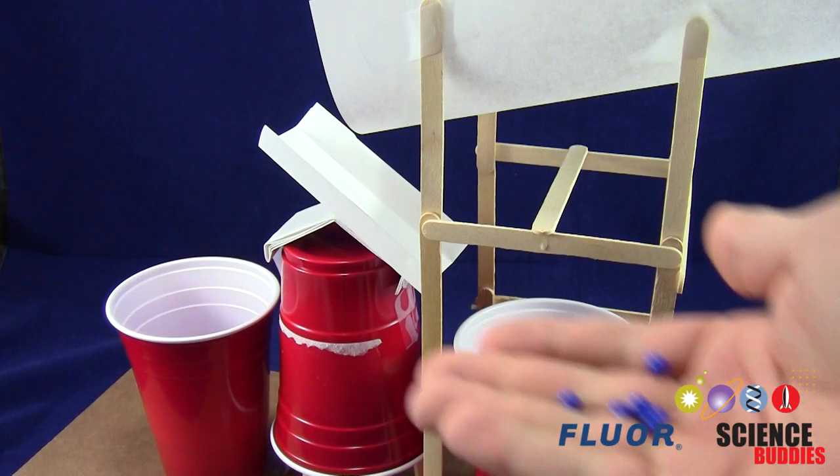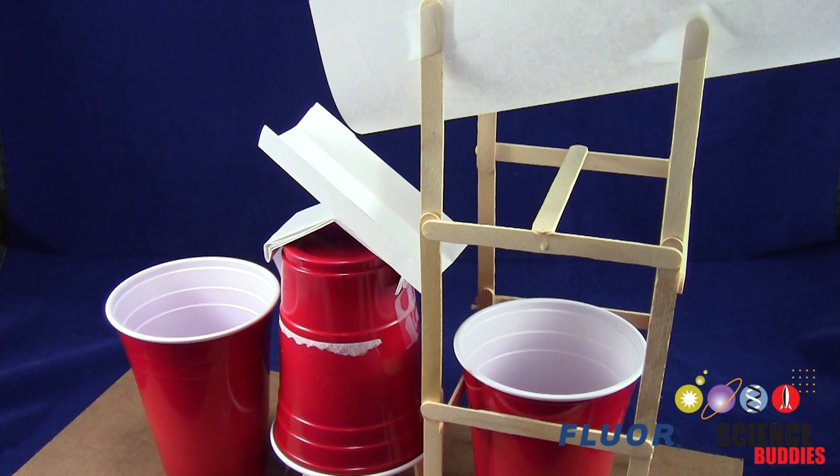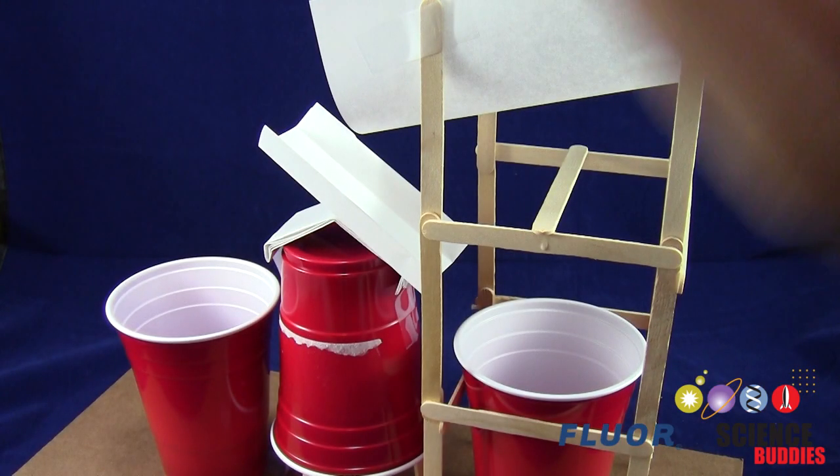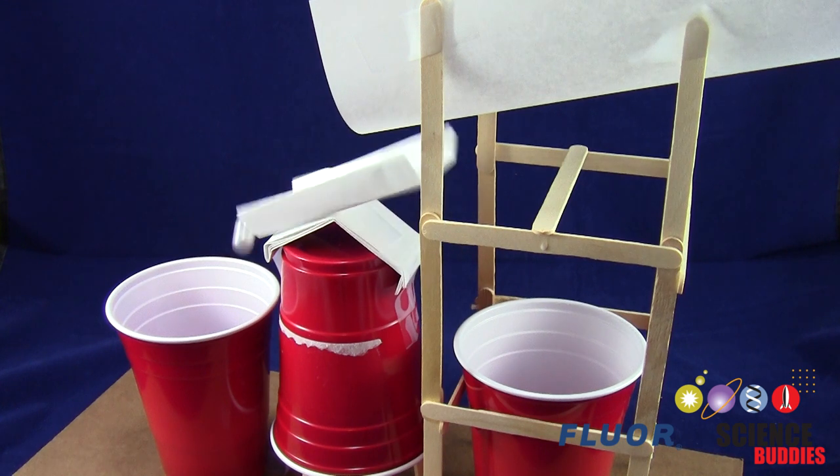This machine uses a lever to separate the spheres. The small blue spheres are too light to tilt the lever, so they fall into it and then roll to the right. The larger white spheres are heavier, and they cause the lever to tilt to the left, so they fall into the other cup.